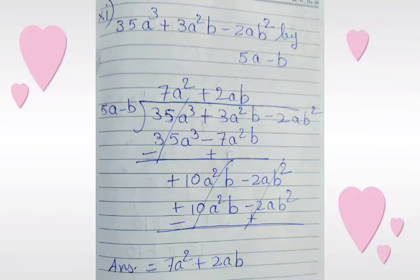Next: 35a cubed plus 3a squared b minus 2ab squared divided by 5a minus b. We multiply 5a minus b with 7a squared and get 35a cubed minus 7a squared b. The first term is cancelled, and after solving the second term we get plus 10a squared b.